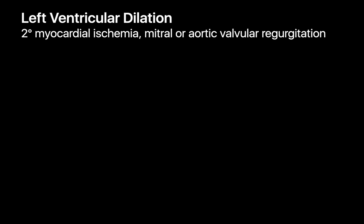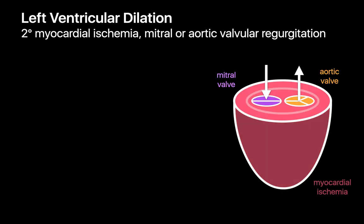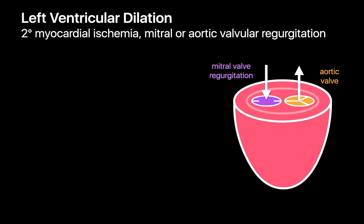Now let's move on to left ventricular dilation in the setting of coronary artery disease, mitral valvular regurgitation, or aortic valvular regurgitation. With myocardial ischemia, the left ventricle's ability to contract is compromised, leading to decreased stroke volume. With mitral valvular regurgitation, some blood ejected by the left ventricle goes backstream into the left atrium rather than downstream into the aorta. With aortic valvular regurgitation, some blood ejected into the aorta is allowed to return backstream into the left ventricle.